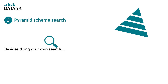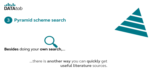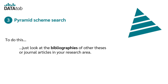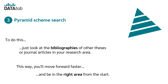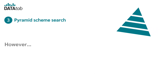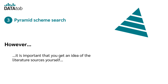Pyramid scheme search. Besides doing your own search, there is another way you can quickly get useful literature sources. Just look at the bibliographies of other theses or journal articles in your research area. In this way, you will move forward faster and be in the right area from the start. However, it is important that you get an idea of the literature sources yourself and do not simply blindly copy them.